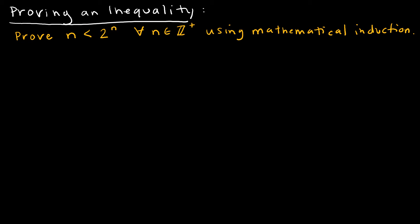Let's take a look at how to prove an inequality using mathematical induction. Here I'm trying to prove that n is less than 2 to the n for all n that are positive integers. So I'm going to let p of n represent whatever I'm trying to prove, which is n is less than 2 to the n for all n that are positive integers.